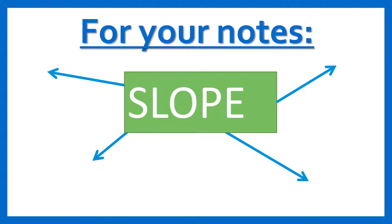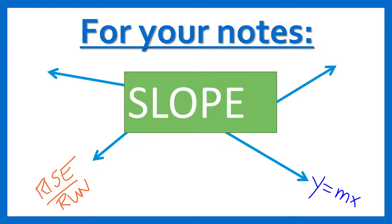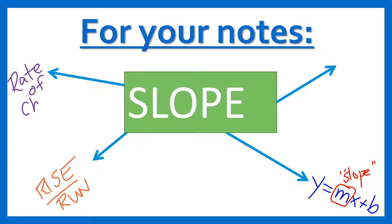A quick review of slope before we practice some problems — remember that slope is rise over run. When you have a graph it's best to use rise over run. Slope is also represented in y = mx + b, that's slope-intercept form, and the slope is the m — it's the number in front of the variable. Slope is the same thing as rate of change, so anytime you hear 'rate of change' that means slope. Slope is also change in y over change in x.